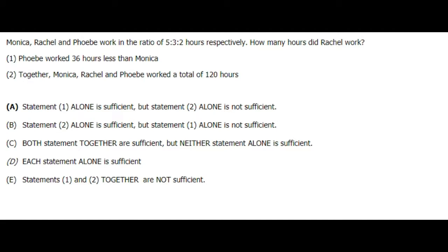It says that Monica, Rachel and Phoebe worked in the ratio of 5:3:2 hours respectively. How many hours did Rachel work? That means that Monica worked 5 times x hours, Rachel worked 3 times x hours, and Phoebe worked 2 times x hours. We want to know how many hours did Rachel work, so we need to find x.